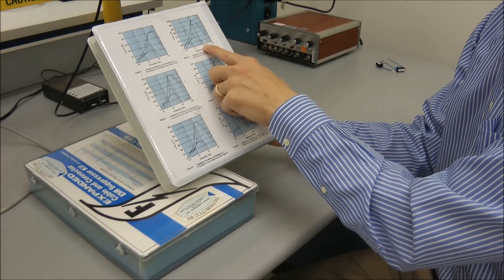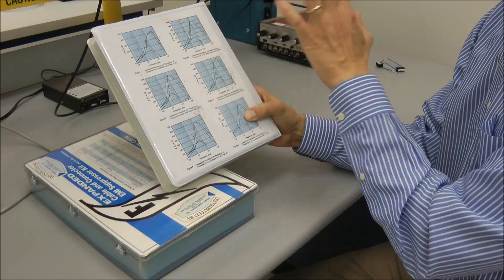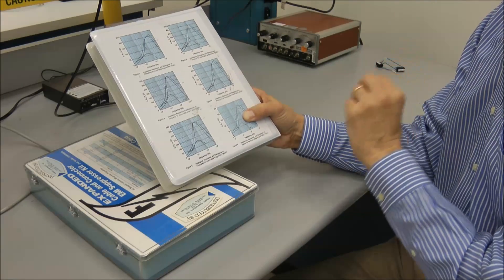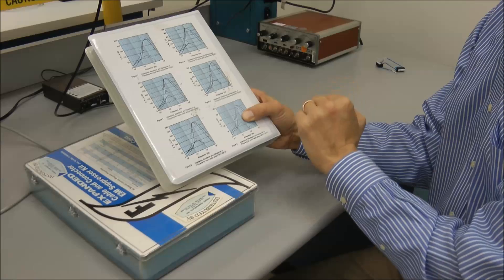So this would be a good ferrite for something that was around 100 MHz that you were trying to suppress. But not so good if it was at 10 MHz or 1 MHz.